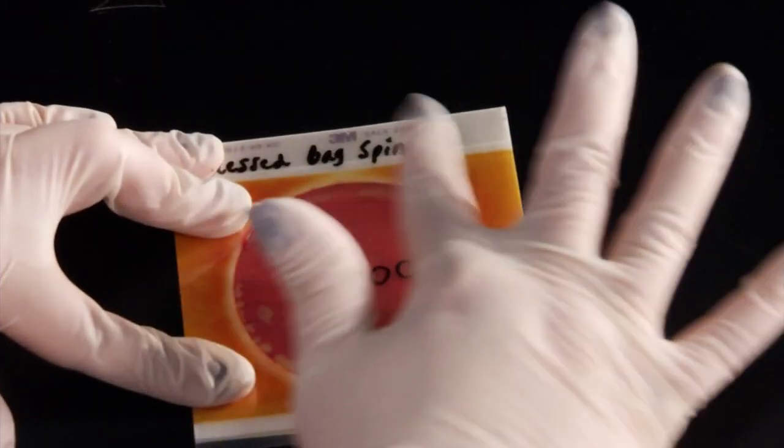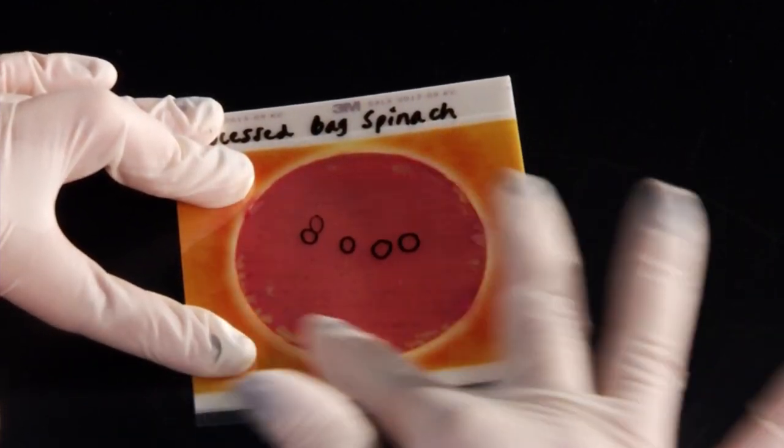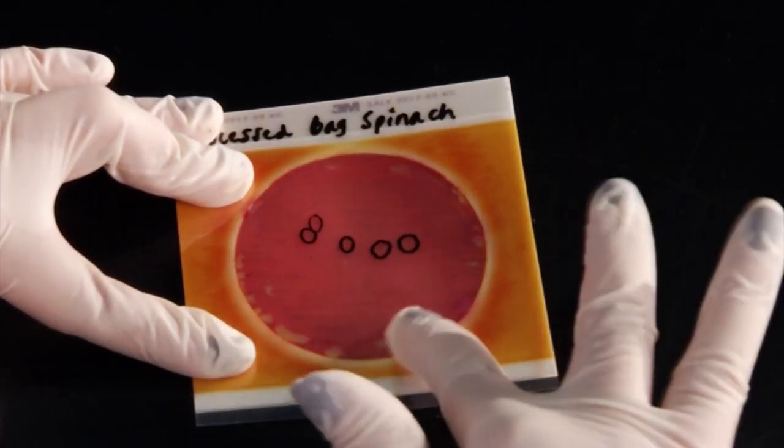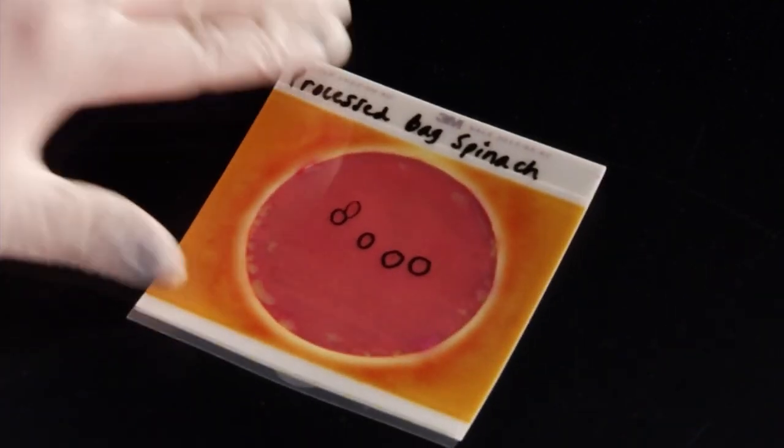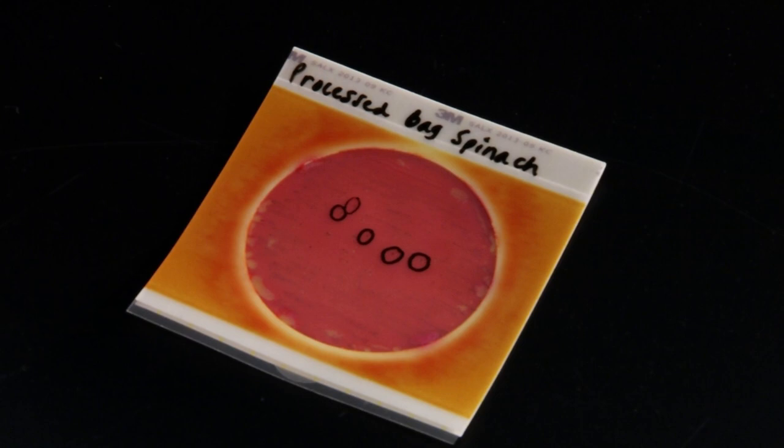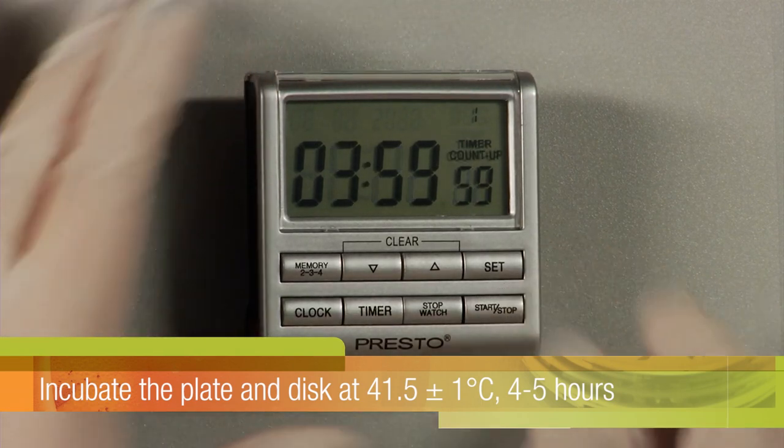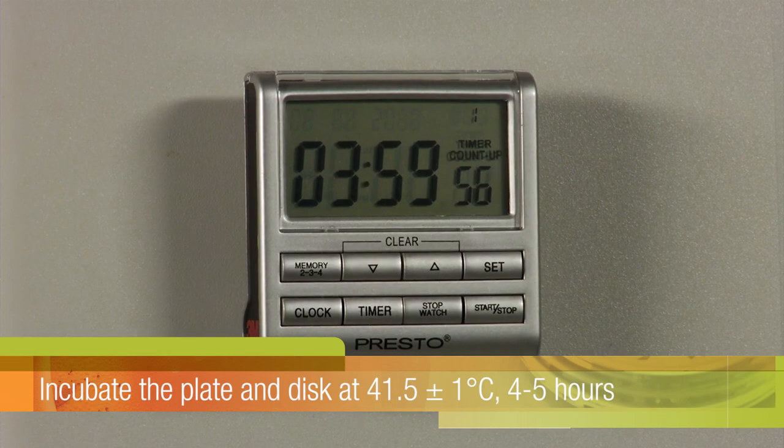Next, gently apply a sweeping motion with even pressure across the top film in order to remove any air bubbles in the inoculation area and assure good contact between the plate's gel surface and the 3M PetriFilm Salmonella Express Confirmation Disc. Incubate the plate and disc at 41.5 plus or minus 1 degree Celsius for 4 to 5 hours.